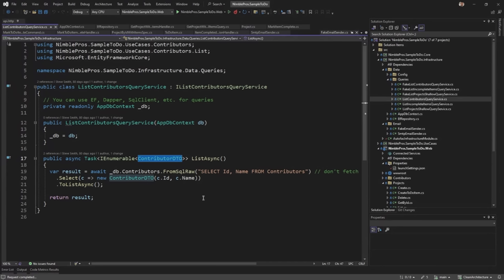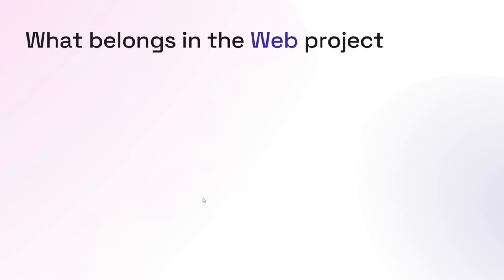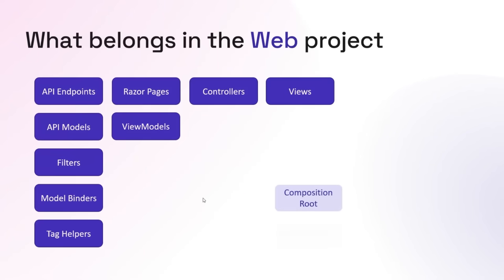In the web project, all the web stuff goes there. If it has to do with ASP.NET Core, it probably goes inside the web project. That's also where your composition root is — where you wire all your services up to their interfaces. Same rules apply as infrastructure: you'll only have services and interfaces here if they have elements tied to the web, like an interface returning a view model, which would have to live here because that's where view models are defined.